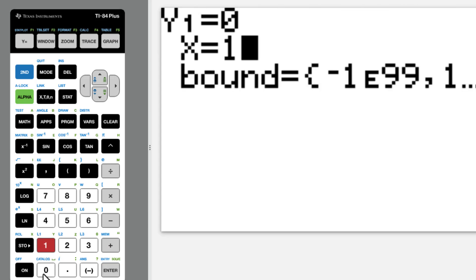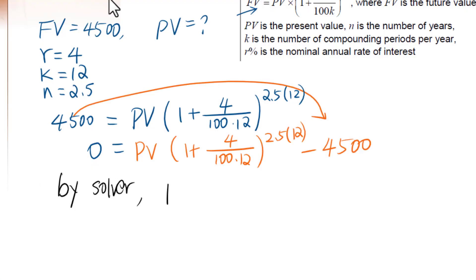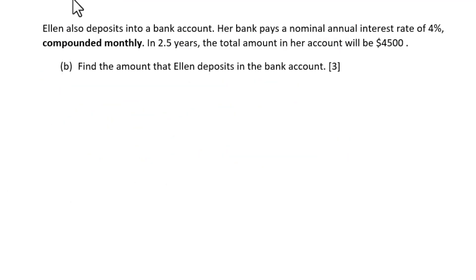Go to Y1. Put 10. Then Alpha, Enter. $4072.45. By solver, PV equals $4072.45. Let's use TVM solver to solve this problem.